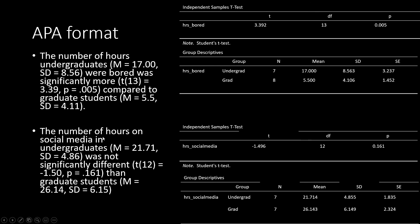In our second example, we found that there wasn't a difference between undergraduates and graduate students on the amount of time they spent on social media. Again, we have our means and standard deviations in parentheses, and we have our t-test itself in parentheses as well, with our degrees of freedom, our t-value, and our p-value. Thanks for watching this video on conducting an independent sample t-test in JASP.